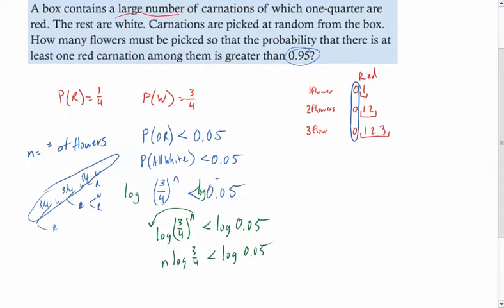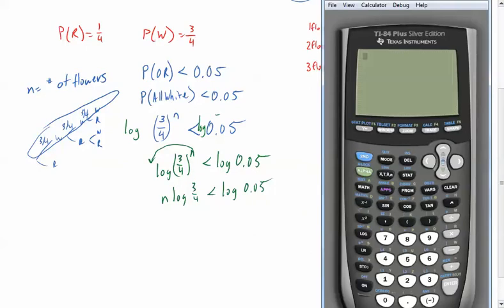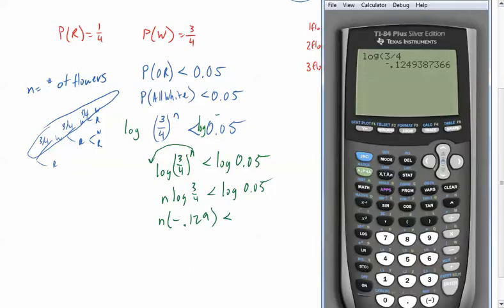Now, what I recommend doing here is taking just a minute to find out what the log of three fourths is and the log of 0.05. Anytime that I can actually just do that and get a number, it will make things a little bit easier in the long run. So let's go ahead and do that. We're going to go log of, log of three fourths, so three over four. And I get negative, see this is why. You'll see that you get n times negative 0.129. Why is that important?